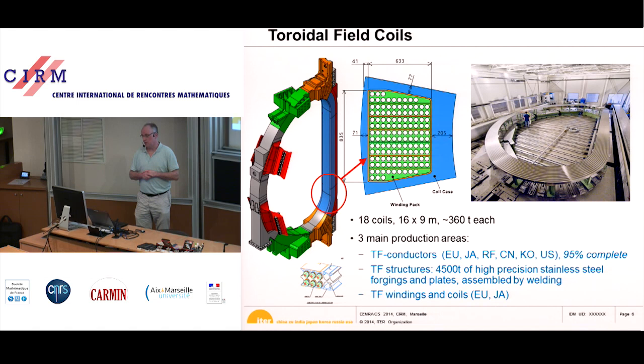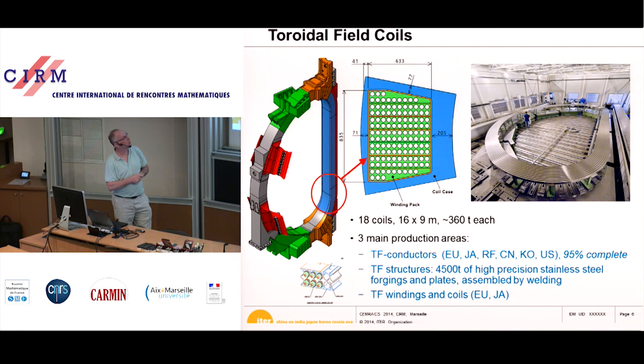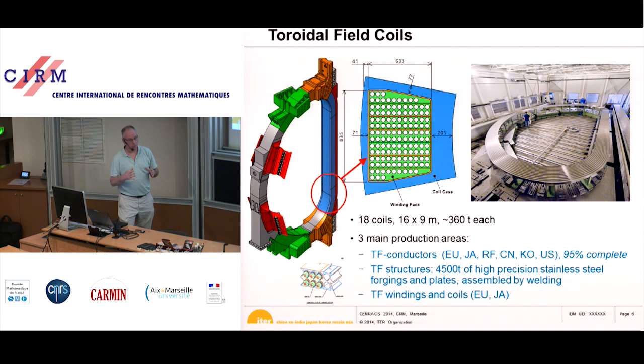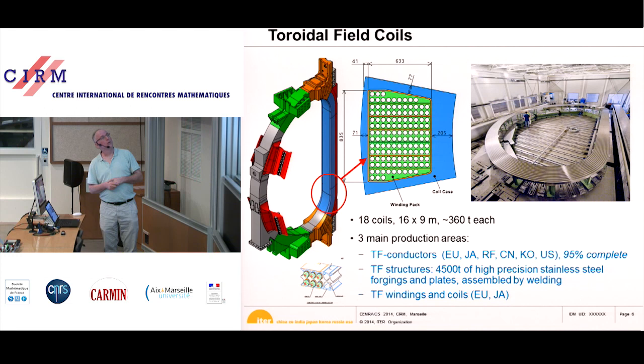Just to show you that things are actually being made — this is a picture of one coil out of 18. If you cut a coil you see it is made of what are called pancakes, with cables lying in plates with grooves called radial plates. The superconducting cable lies inside these grooves. This is necessary to manage the forces on the coils, which want to expand when a magnetic field is applied. The actual production is starting now in Italy, making about one radial plate a month.